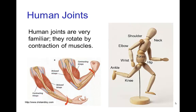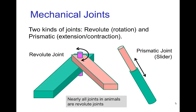Of course, we are very familiar with joints in the human body and how they are rotated by the contraction of the muscles — joints like the elbow or the ankle and so forth. In animals, virtually all the joints are revolute joints, which means it's a joint which produces a rotation.